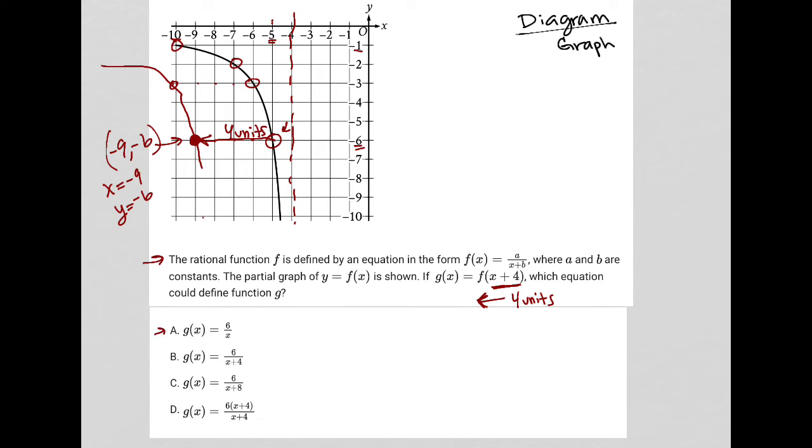So for choice A, for instance, g(x) equals six over x, that would be six over negative nine, and g(x) would equal negative six. That's not true, right? Negative six does not equal six divided by negative nine.